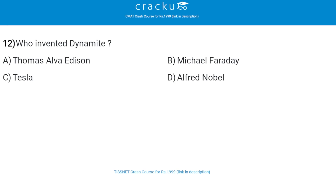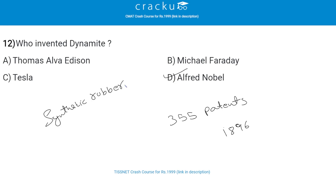Next: who invented dynamite? The correct answer is Alfred Nobel, that is option D. Swedish chemist, inventor, engineer, entrepreneur and businessman Alfred Nobel acquired 355 patents worldwide. When he died in 1896, he had invented dynamite and experimented in making synthetic rubber, leather, and artificial silk, among many other things.